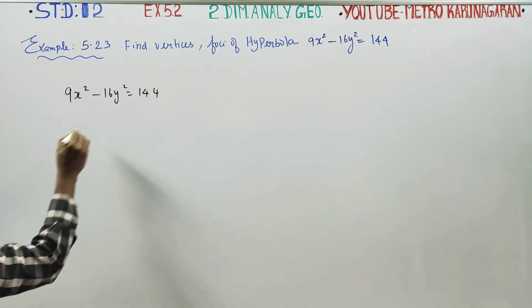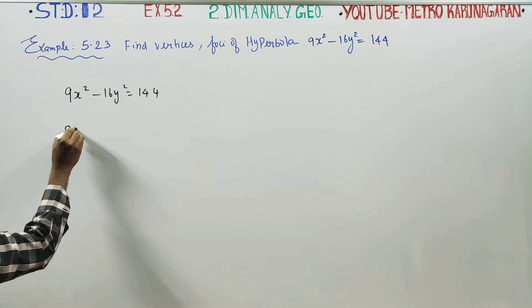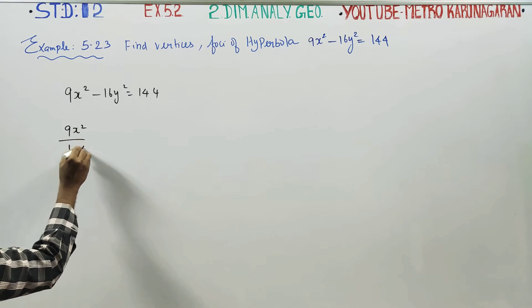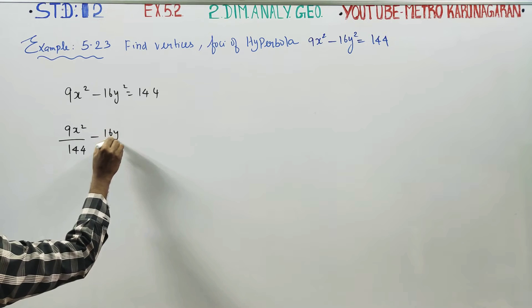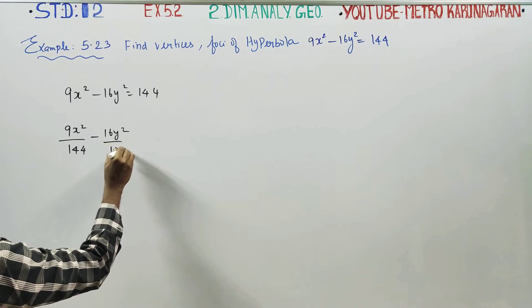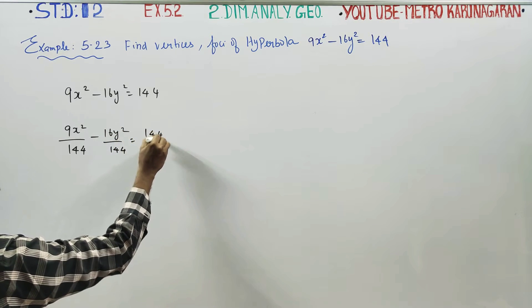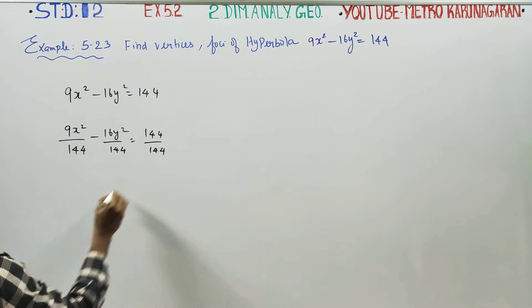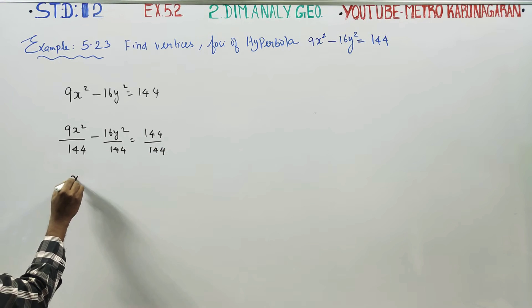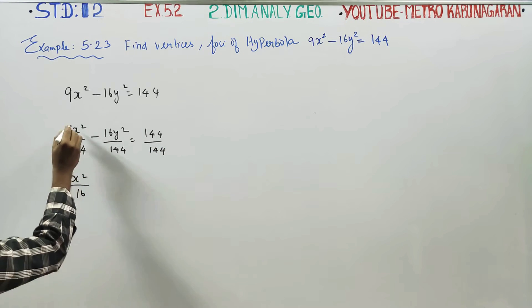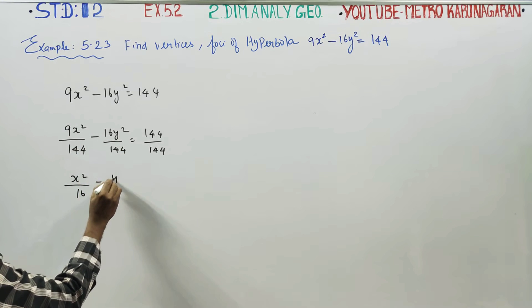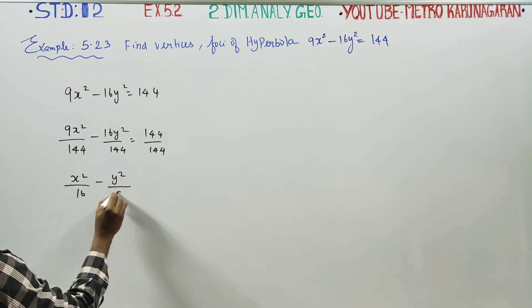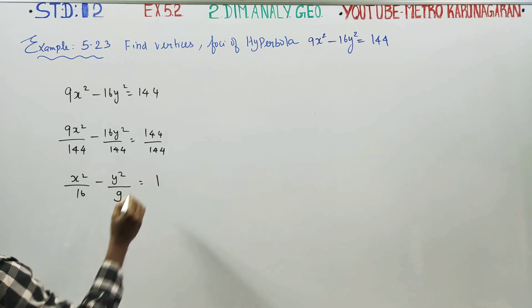You just divide by 144. 9x² by 144, 16y² by 144 equals 144 by 144. You will be getting x² by 16 minus y² by 9 equals 1.